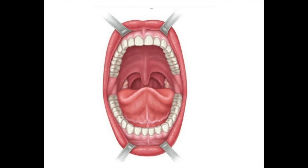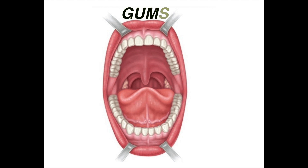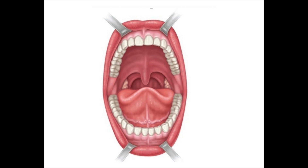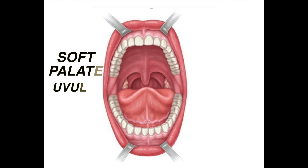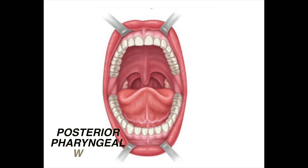The oral cavity, referred to as the mouth, includes the lips, buccal mucosa, gums, teeth, roof, floor of the mouth, tongue, soft palate, uvula, tonsillar pillars, tonsils, and posterior pharyngeal wall.